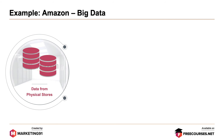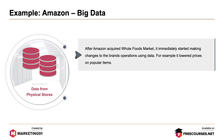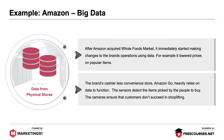And finally, the data gathered from physical stores. After Amazon acquired Whole Foods Market, it immediately started making changes to the brand's operation using data — for example, it lowered prices on popular items. The brand's cashless convenience store, Amazon Go, heavily relies on data to function. The sensors detect items picked up by people to buy, and the cameras ensure that customers don't succeed in shoplifting.